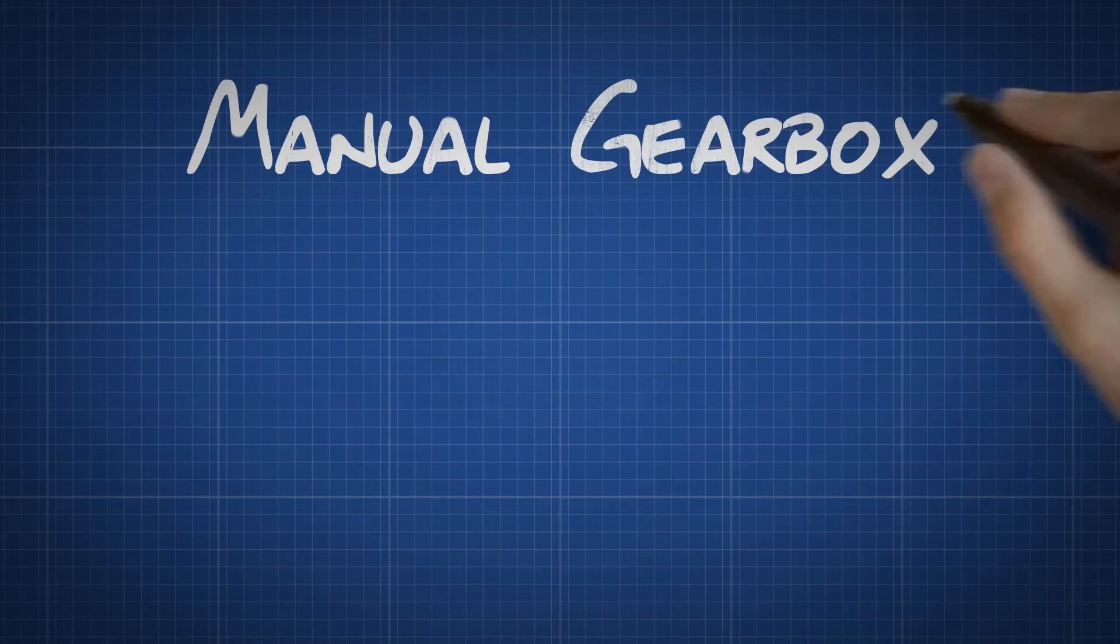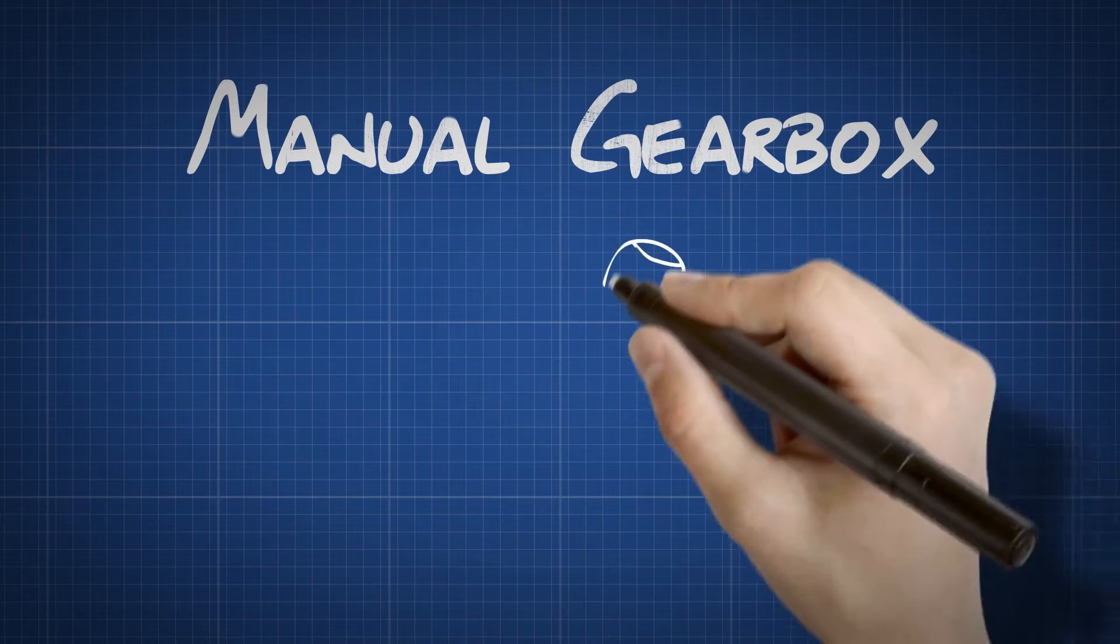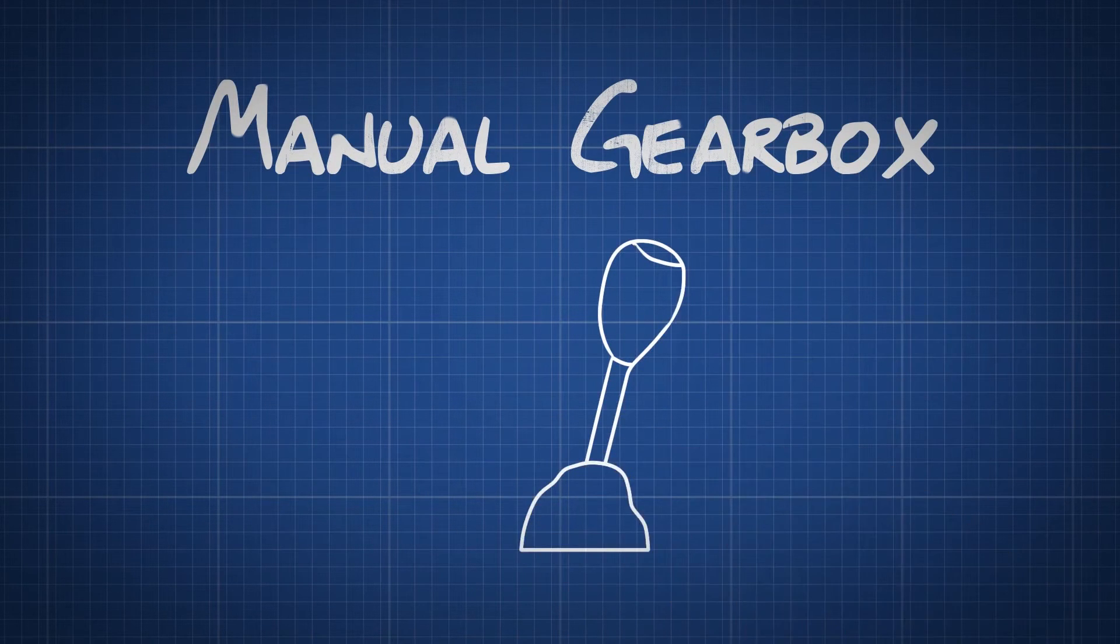How a manual gearbox works. In simple terms, a manual gearbox or manual transmission on a car is a set of gears that are selected by moving a gear stick.